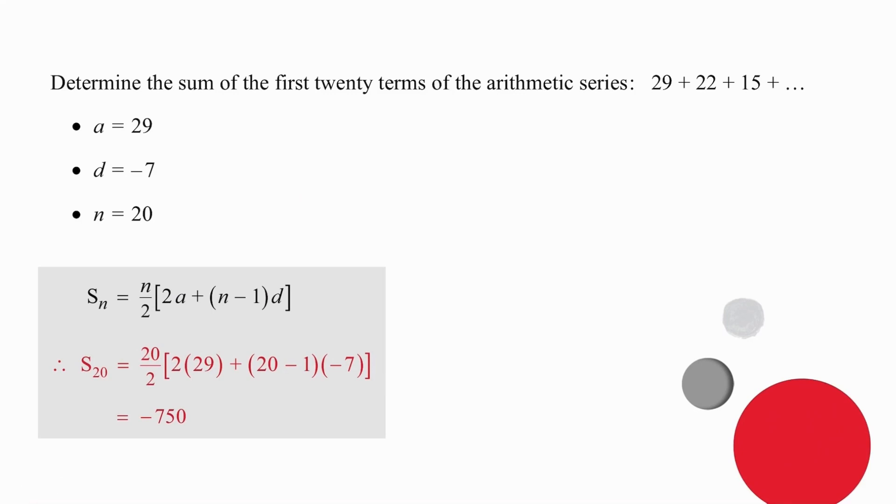Careful substitution. 29 for the A value, 20 for the N value and minus 7 for the difference. And your sum is minus 750. Pause the video and try this again if that didn't make sense to you.